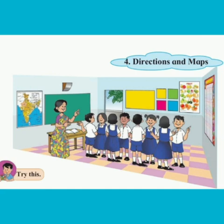Let's try this. Stand in two rows in the classroom facing each other. Now, tell the answers to the following questions to a friend standing in front of you: On which side of you is the blackboard? On which side of you is the main door of the classroom? On which side of you is the teacher's table? You will come to know that your answers and the answers of your friend facing you are different.